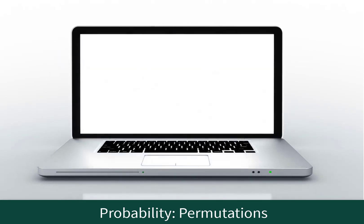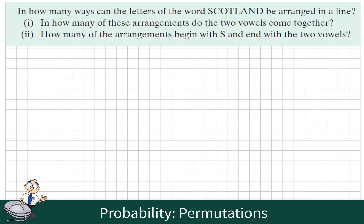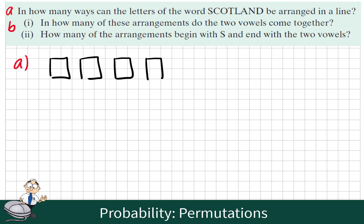This is a permutations probability question for Leaving Cert higher level students. In how many ways can the letters in the word Scotland be arranged in a line? To answer this question, let us create 8 tiles, one for each of the letters in Scotland, and imagine how many choices we would have for each position.